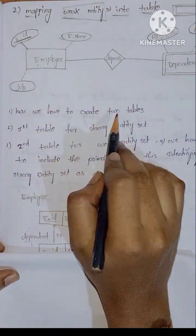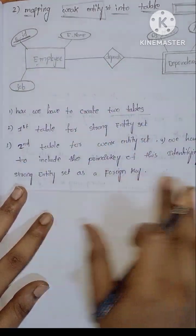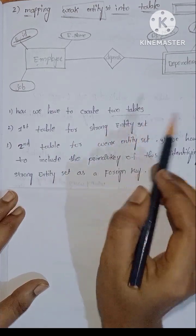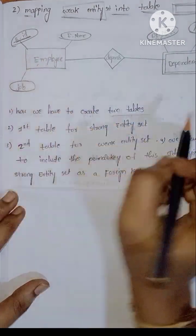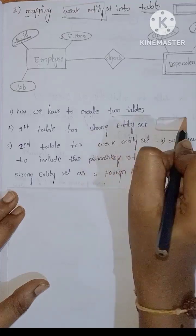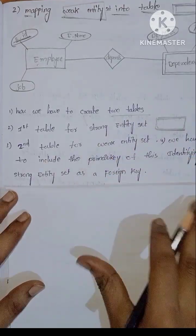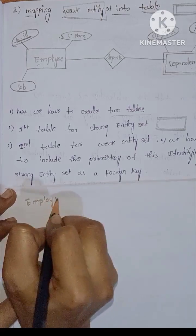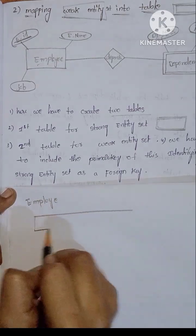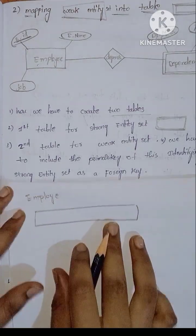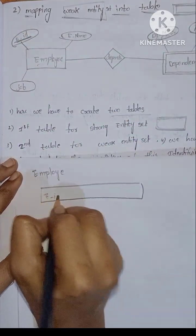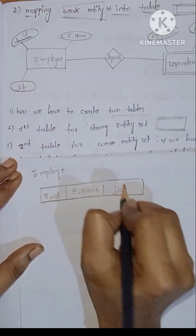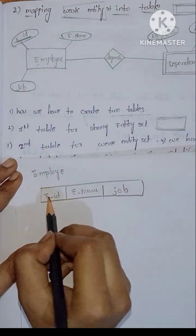To map the weak entity, we need to create two tables. The first table is for the strong entity set, represented by a single rectangle. Employee is the strong entity. We create one table for employee with columns: employee ID, employee name, and job.